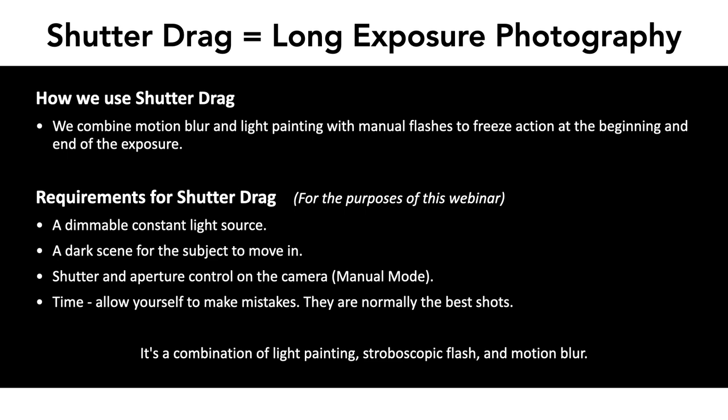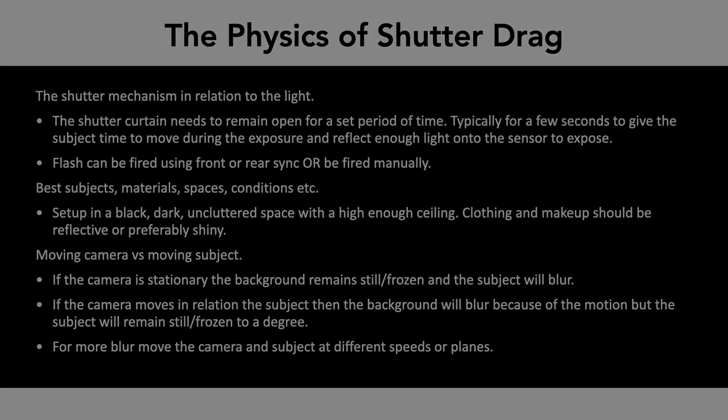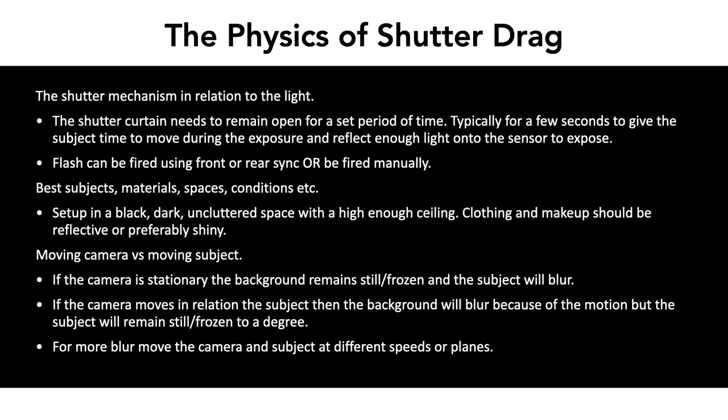Some requirements you'll need for shutter drag: a dimmable constant light source — something you can increase or decrease the power on — a dark scene for your subject to move inside, and you need to be able to control shutter, aperture, and ISO on your camera, so preferably manual mode. Allow yourself enough time because there's no way of guaranteeing anything in this. You can make a lot of mistakes — we shoot hundreds of photos to finally get what we want. The best ones are usually accidental.